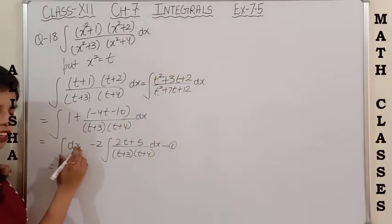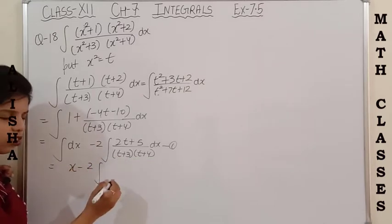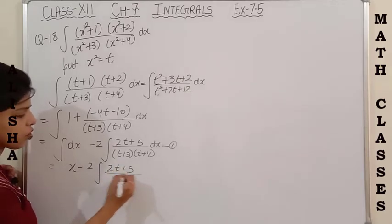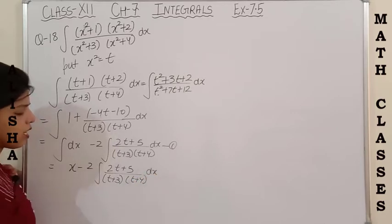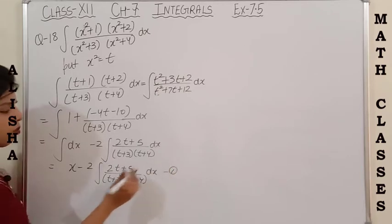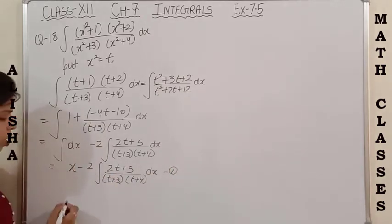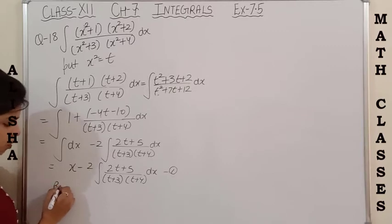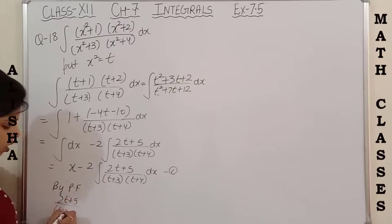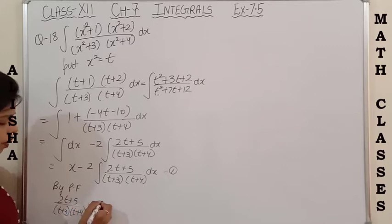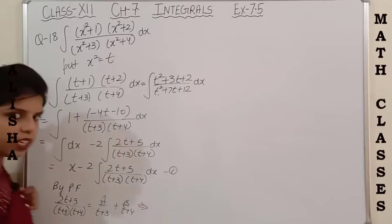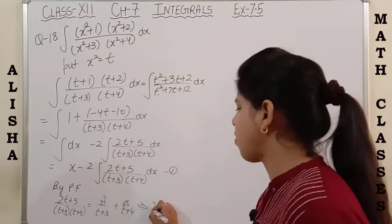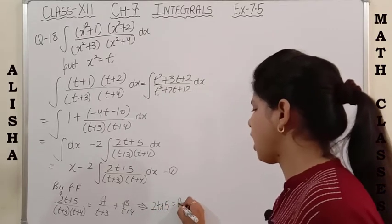The integration of 1 with respect to x becomes x. For this type of function we use partial fractions to integrate. By partial fractions, (2t+5) upon (t+3)(t+4) can be written as A upon (t+3) plus B upon (t+4). Simplifying by taking the LCM on both sides, I get: 2t+5 equals A(t+4) plus B(t+3).